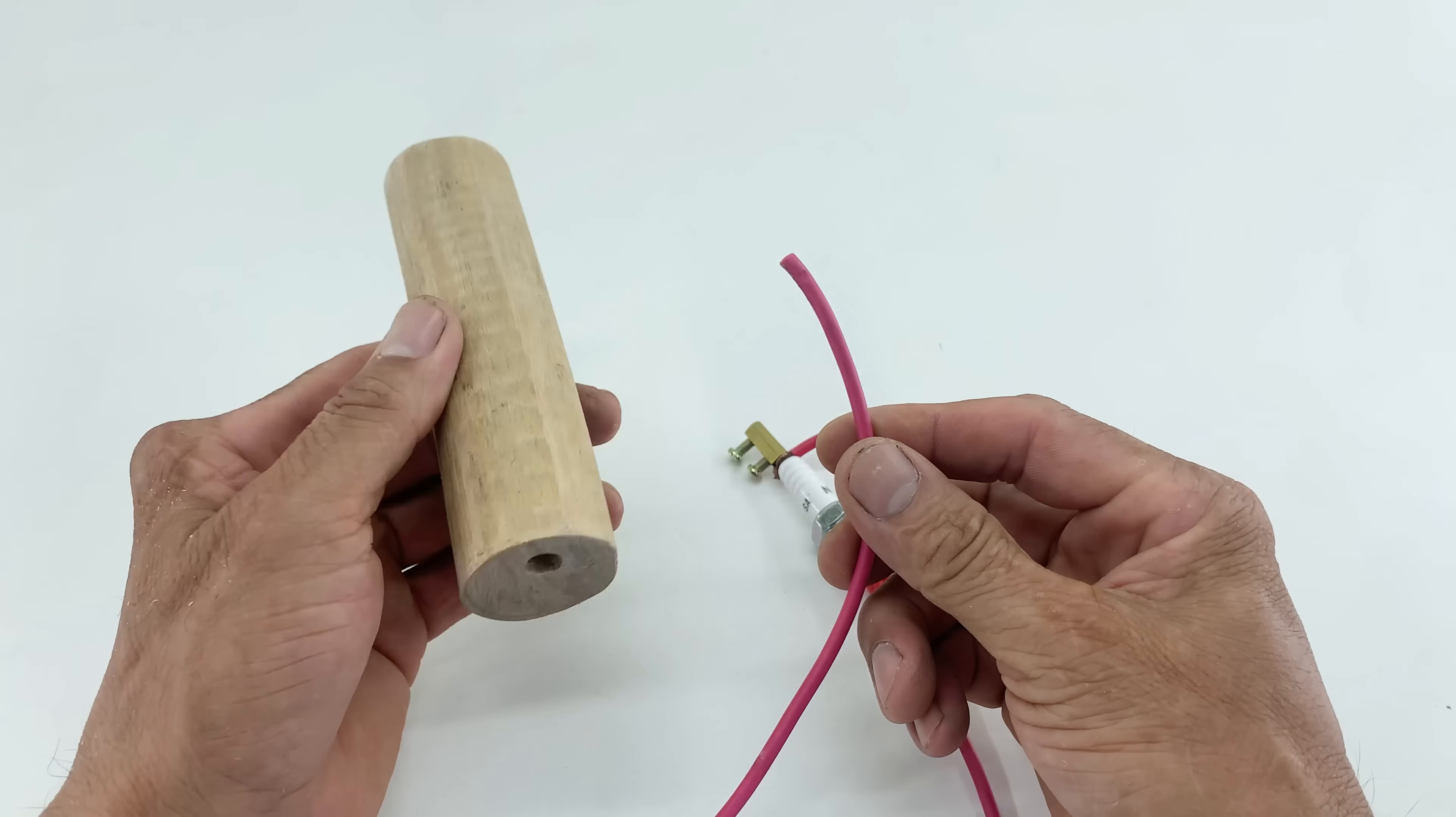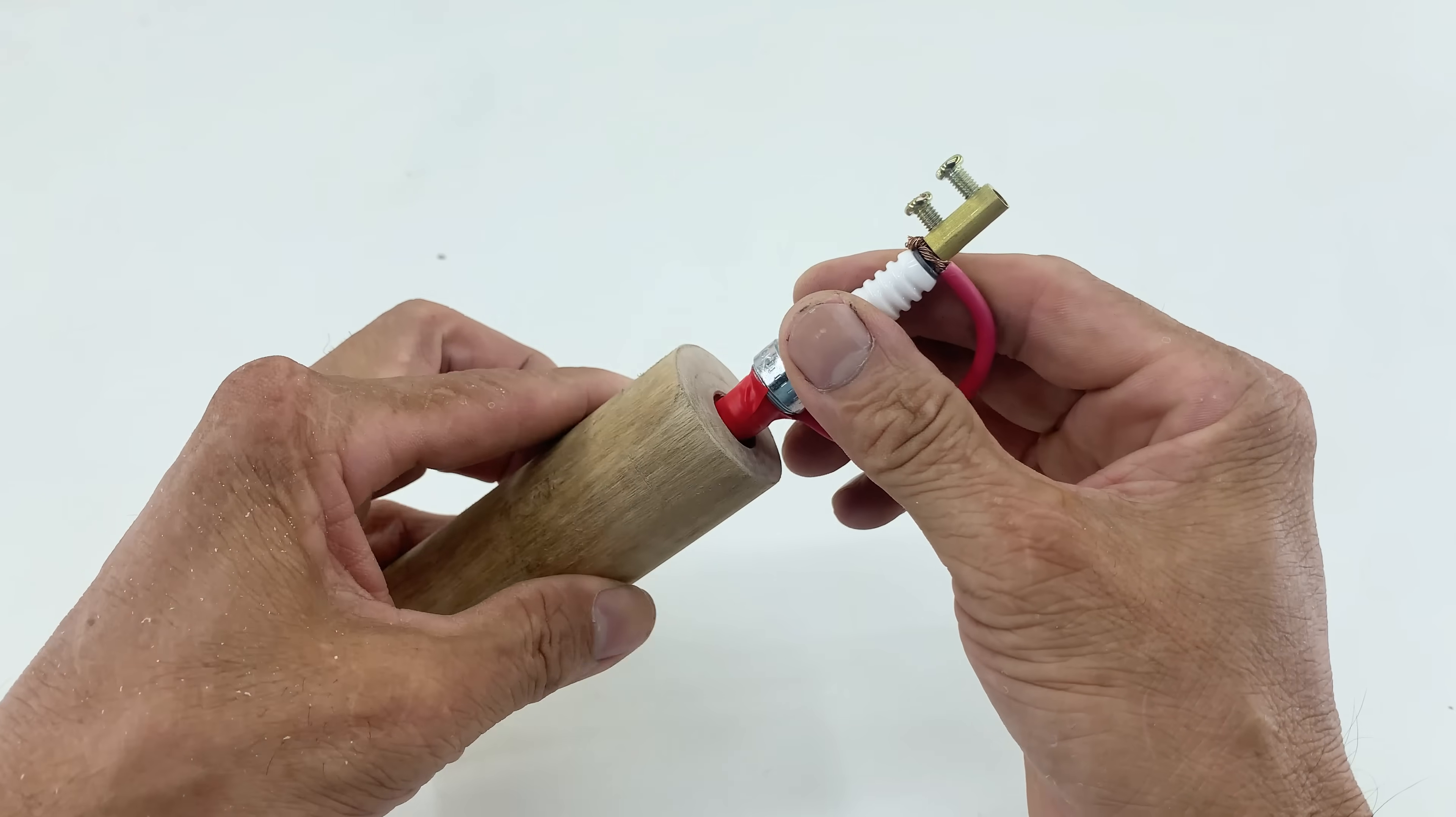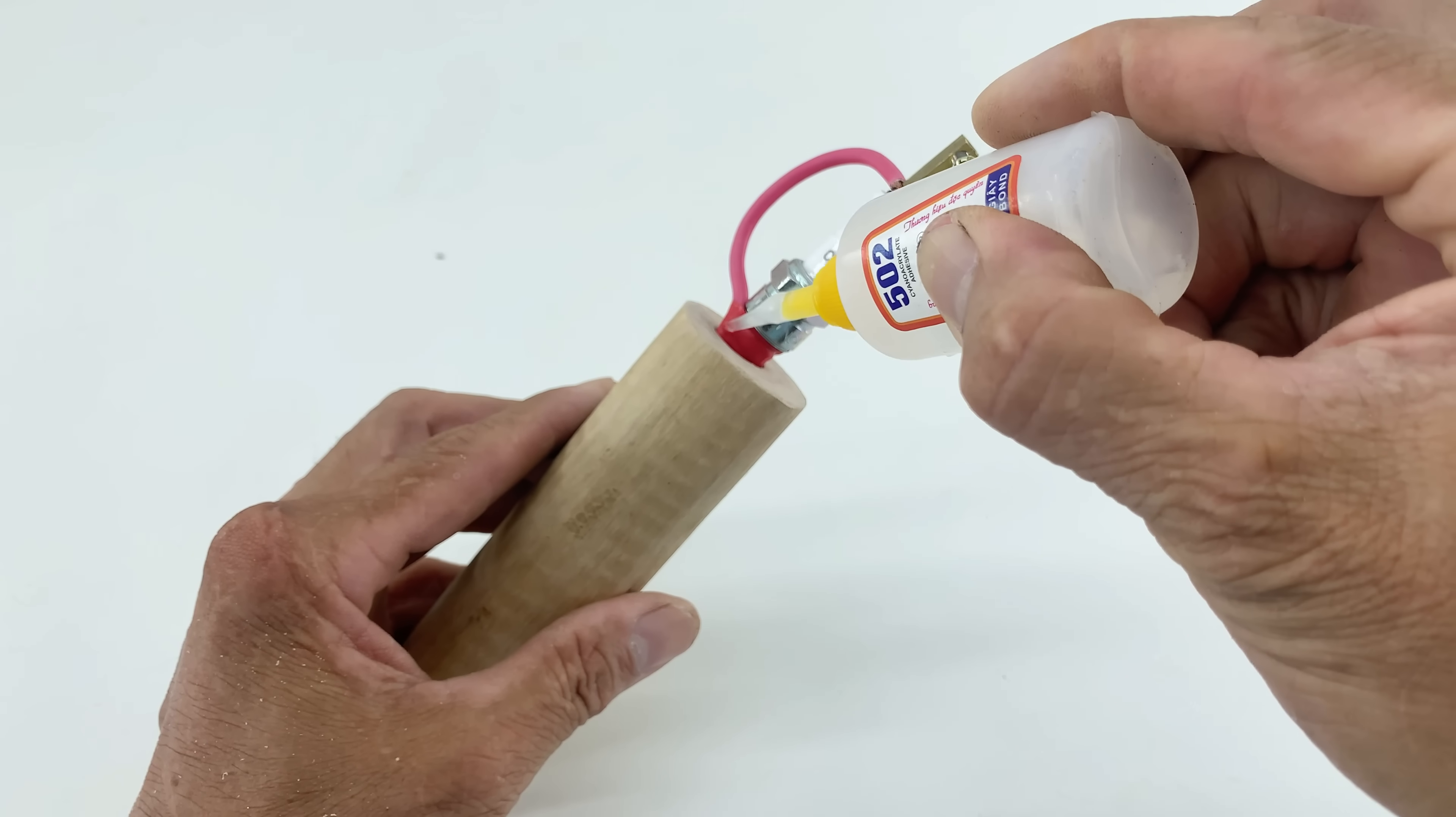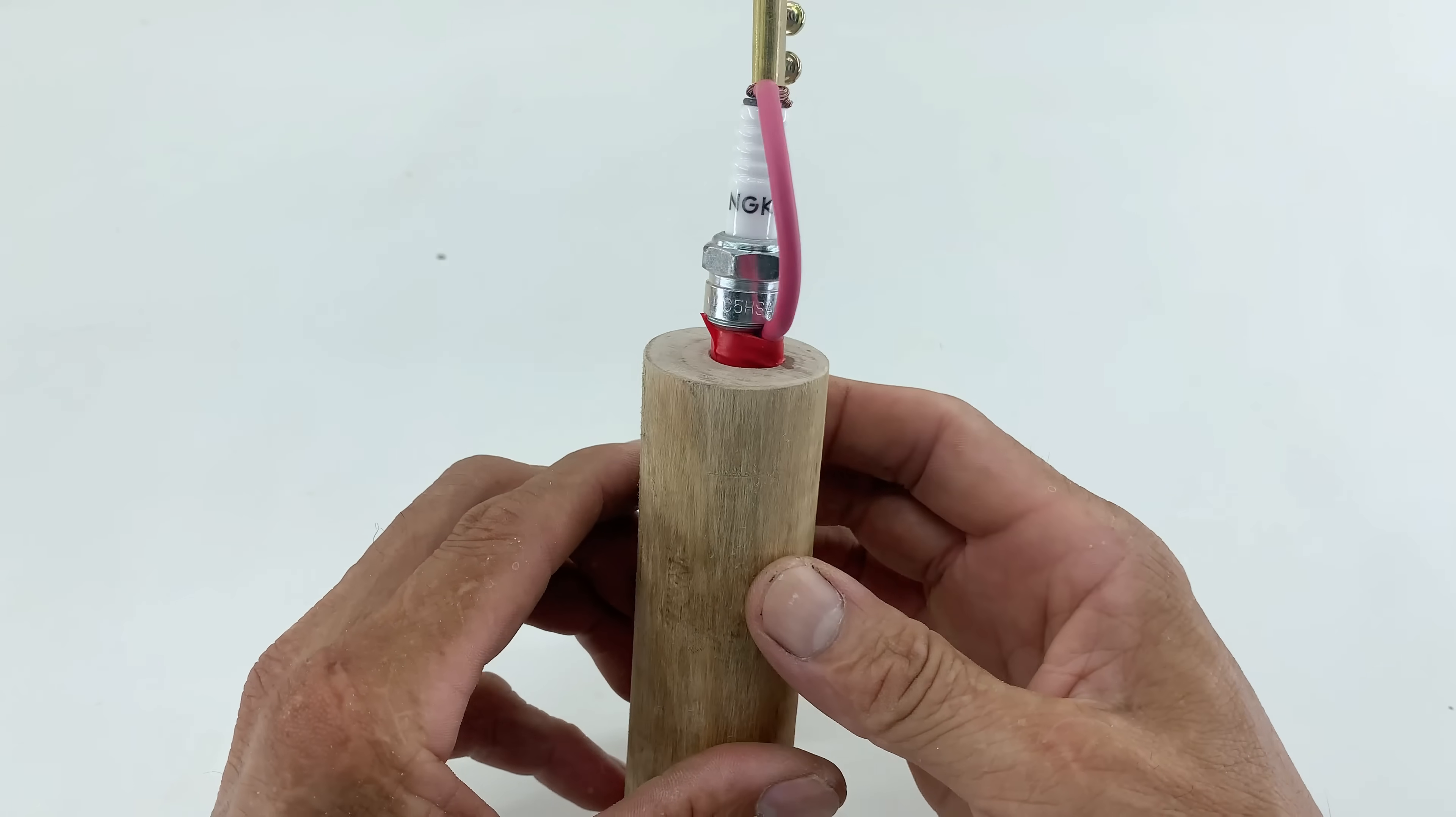With the hole prepped, I carefully insert the spark plug assembly into the wooden handle. This provides a comfortable grip and insulates the user from the heat generated by the spark plug. I want it to be firm and stable. To permanently secure it, I'm applying a few drops of superglue around the base where the spark plug meets the wood. This adhesive cures rapidly, forming a solid bond that prevents rotation or dislodgement during operation.